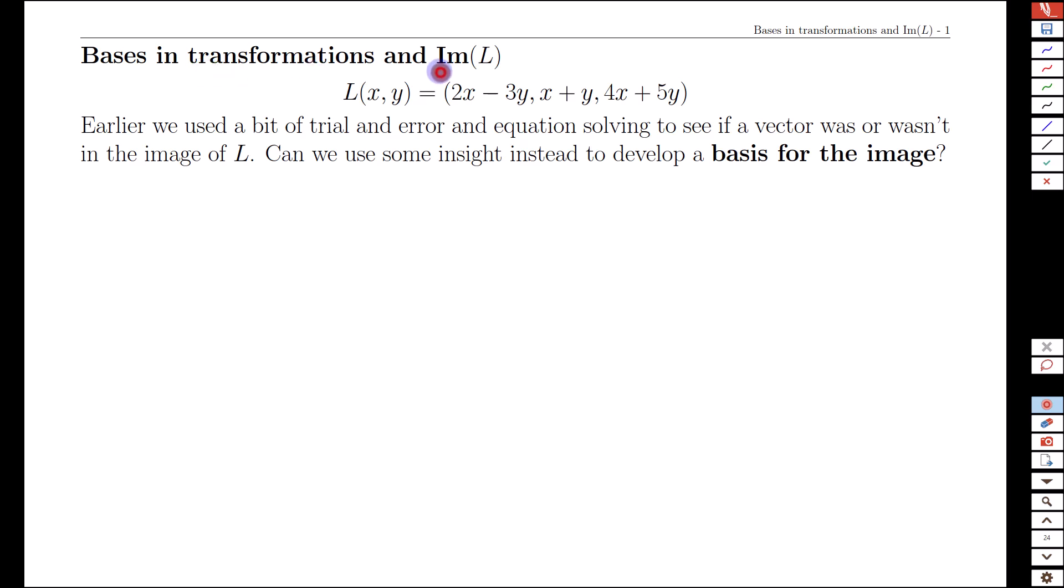When looking at transformations, specifically the image of a transformation, we've learned that the image makes up a vector subspace. A natural question is: what would be a basis for that subspace? What building blocks could be used with linear combinations to build every element in the image? Earlier we used trial and error to check if a vector was in the image. Now we'll be more strategic and take a different angle.